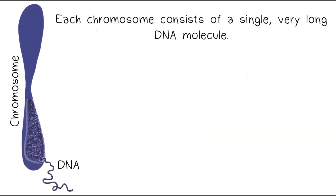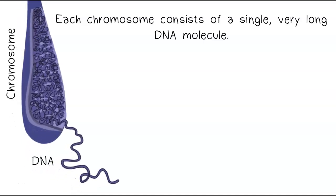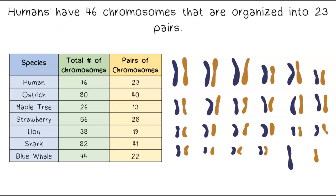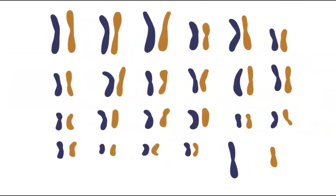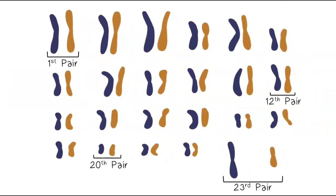Each chromosome consists of a single, very long DNA molecule. Different species have different numbers of chromosomes, and their DNA is organized in different ways. Humans have 46 chromosomes that are organized into 23 pairs. This image represents all 46 human chromosomes, organized into 23 pairs.